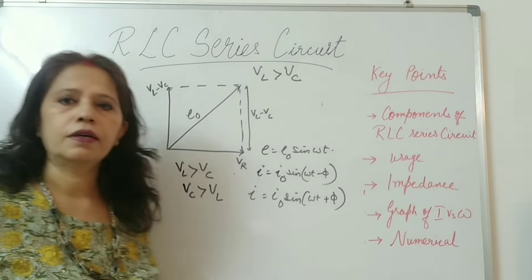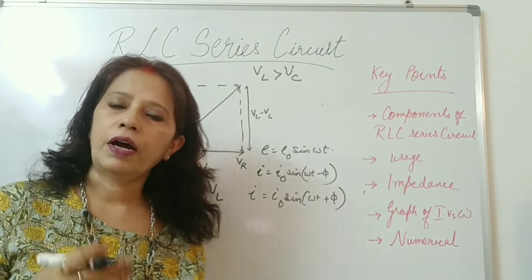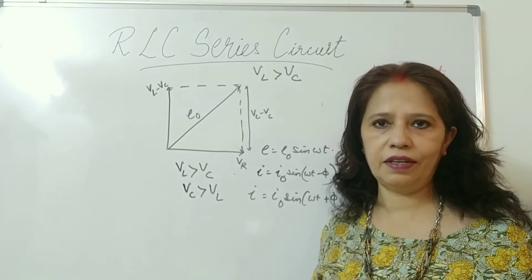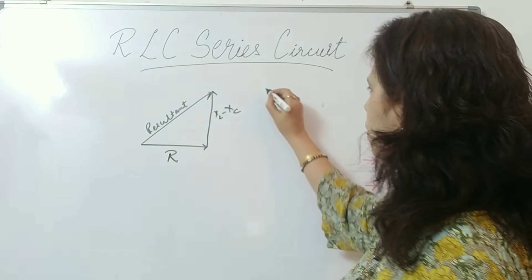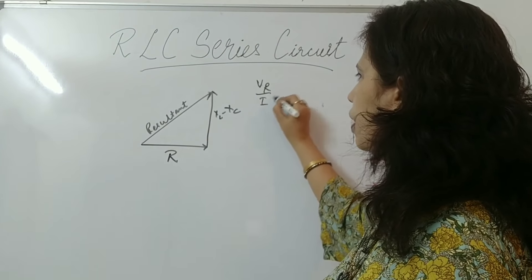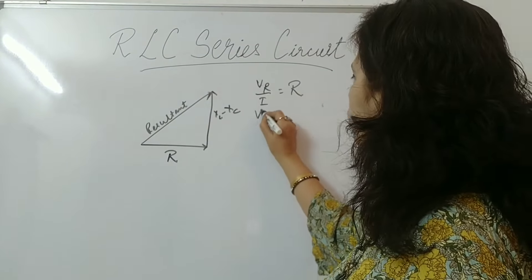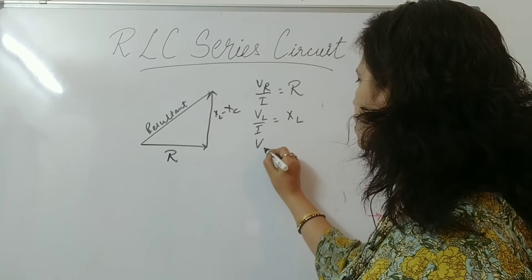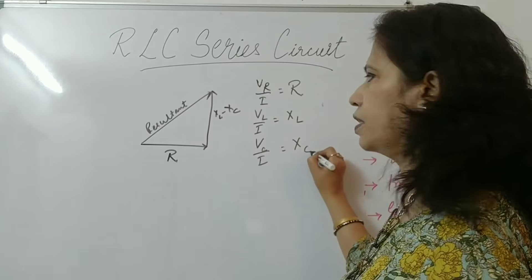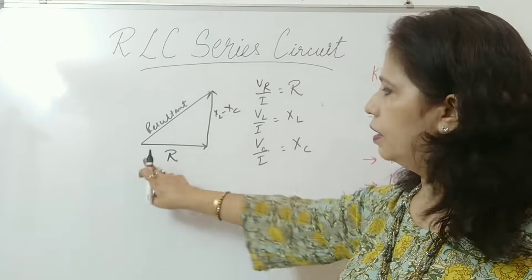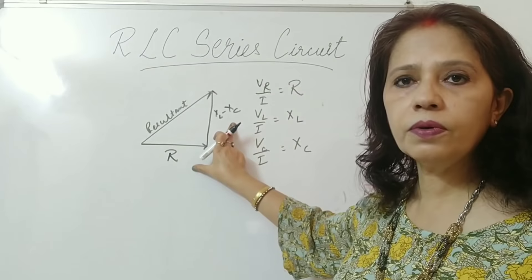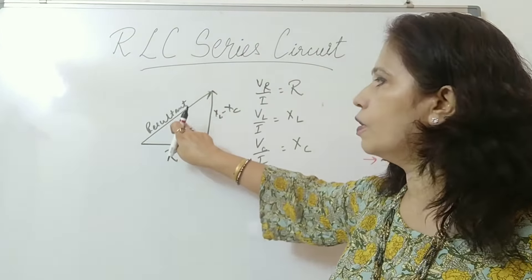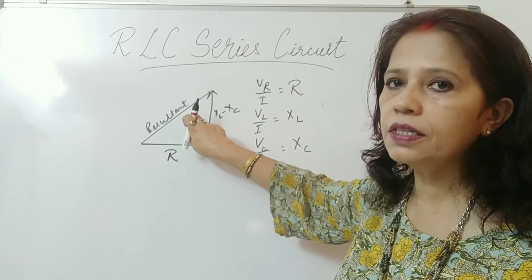Now if in a triangle, these sides are divided by a similar quantity, then the ratio will not change and we will get a similar triangle. Let us see that similar triangle. VR divided by I gives R. VL divided by I gives us XL and VC divided by I gives us XC. So this is the similar triangle. R and XL minus XC are the two sides of this triangle. And this is called the resultant. So what will be this value of resultant and what it is called?